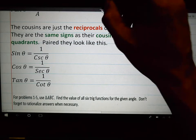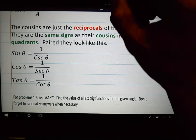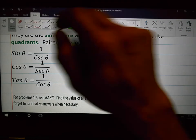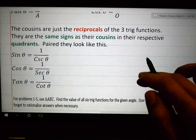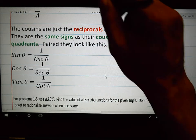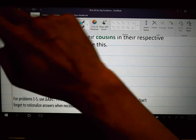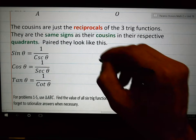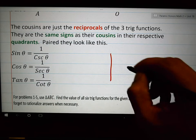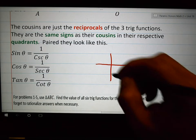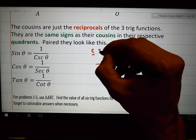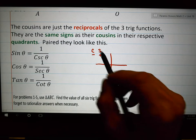Earlier, I taught you that in this quadrant right here that the cosine is negative and that the sine is positive. Yes? Well, what does that mean?